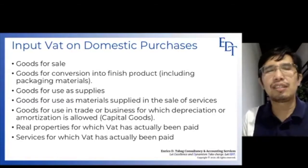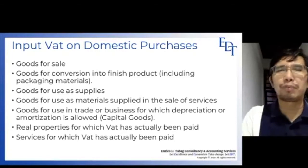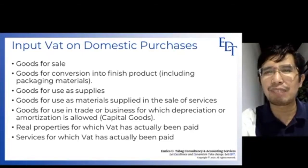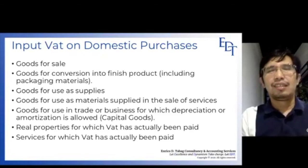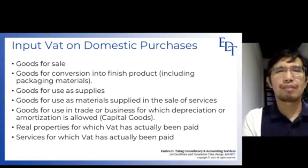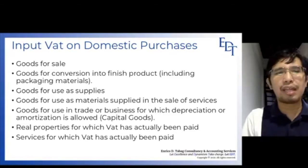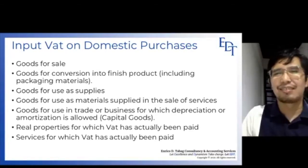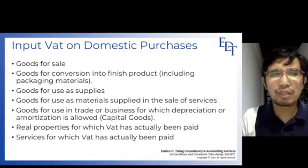The qualifying purchases include: goods for sale, goods for conversion into finished product such as raw materials, goods for use as supplies, and goods for use as materials supplied in the sale of services. You may also claim input VAT on goods for use in trade or business for which depreciation or amortization is allowed — meaning capital goods like PPE.